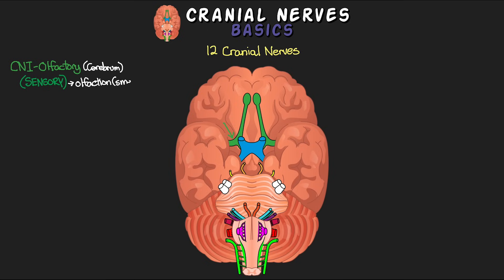The next cranial nerve, shown here in blue, is cranial nerve two — the optic nerve. This is the other of the two nerves that originate from the cerebrum. Just like the olfactory nerve, the optic nerve is solely a sensory nerve and is responsible for vision.